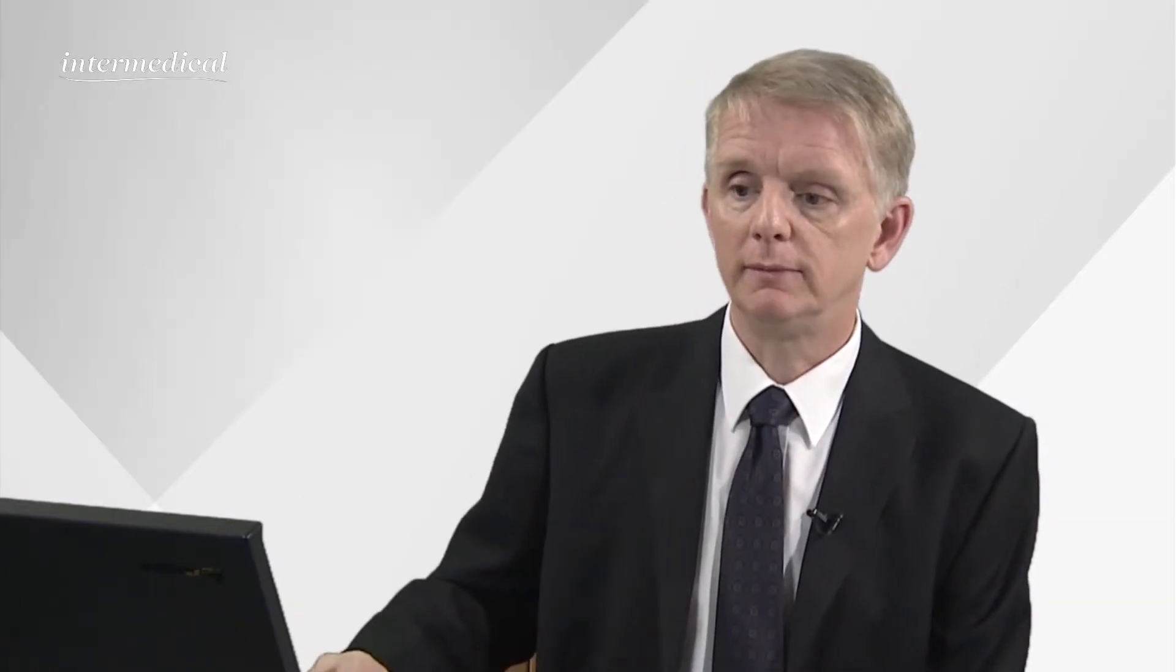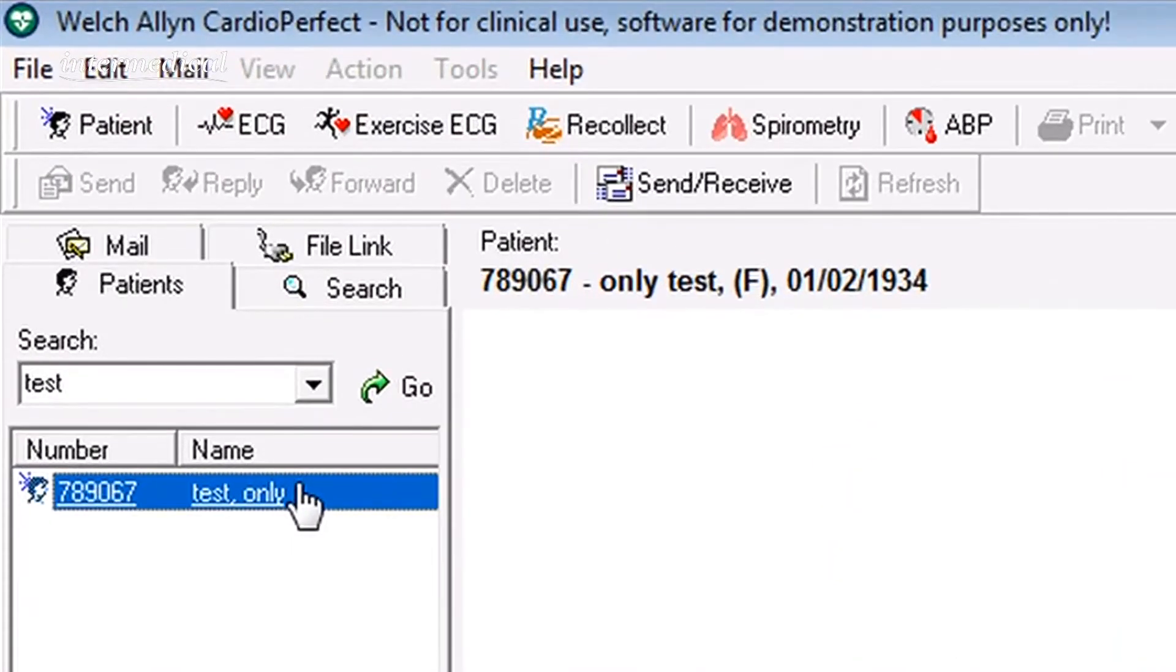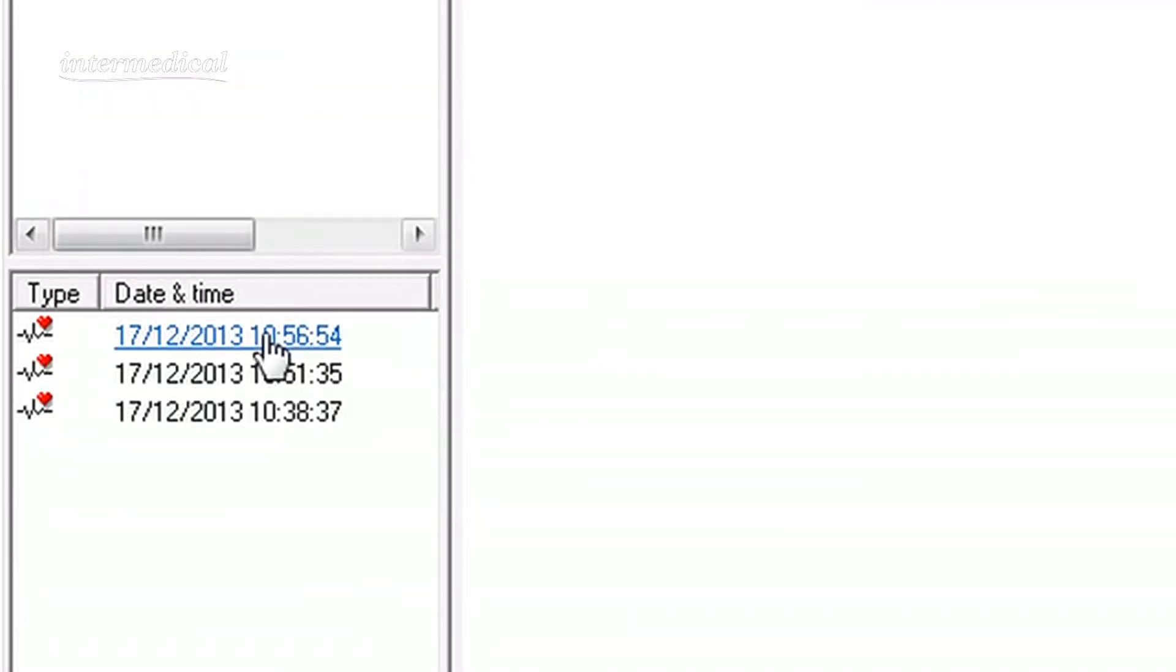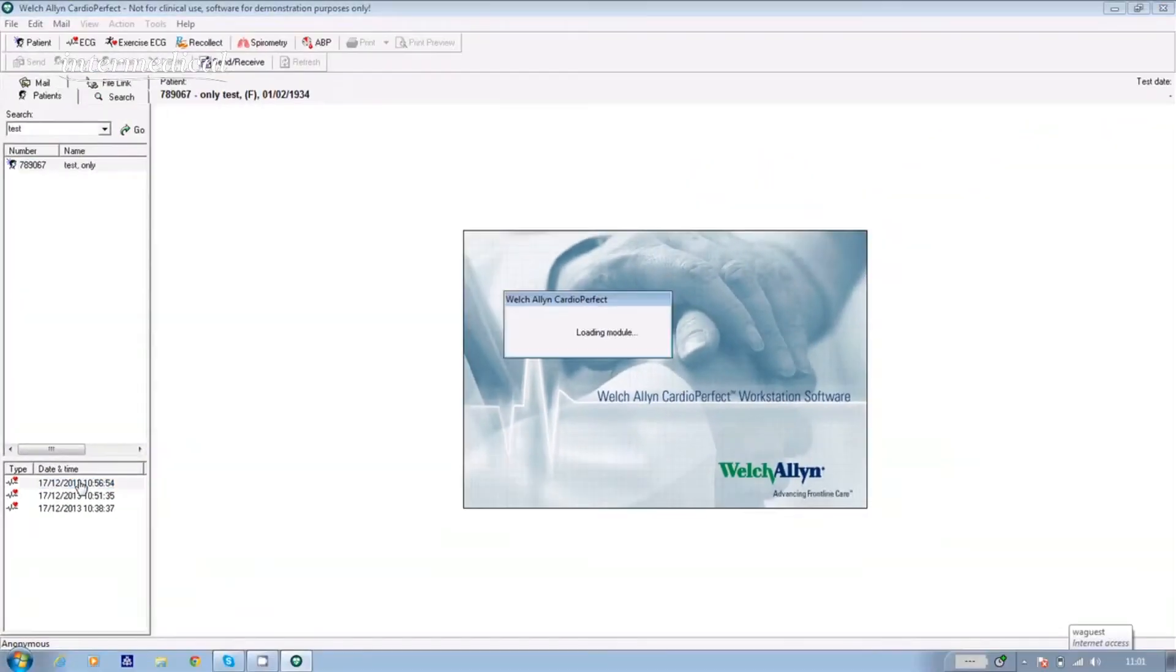If you ever want to look at previous recordings, open the software, highlight your patient's name, and in the bottom left hand corner of the screen you'll see a list of any other tests. To view them, just highlight the one you'd like to study and it'll appear on screen.